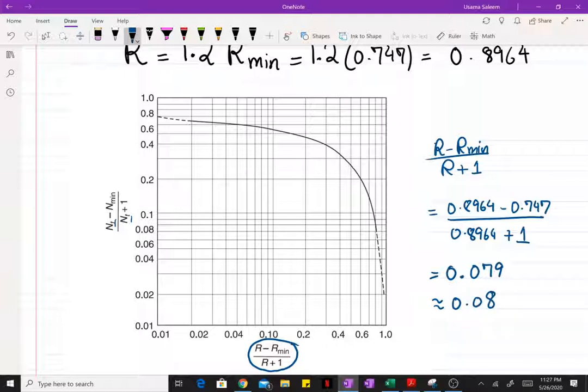Okay, so now let's read that graph. It's a log-log graph, so the intervals keep shrinking as you move towards the next order of magnitude. So 0.02 right here, 0.03, 0.04, 0.05, 0.06, 0.07, and 0.08 hold right on this line.